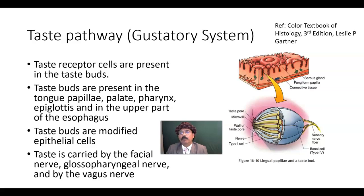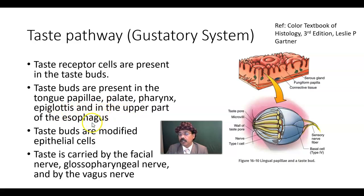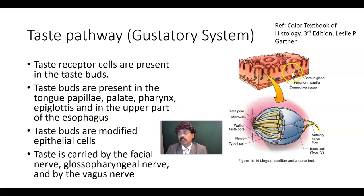Taste buds are present in the palate — both hard palate and soft palate — pharynx, epiglottis, and upper part of the esophagus. So all the tongue papillae contain the taste bud except the filiform papillae.